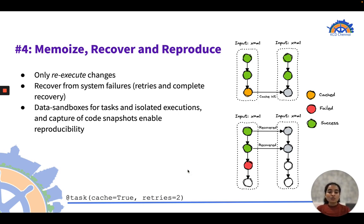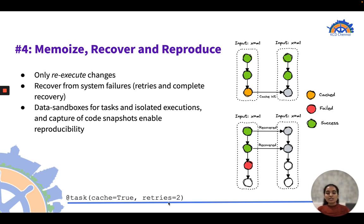Flight also supports retries. You can set the number of retries in the task decorator, and when set, Flight will attempt to re-run the pipeline in the case of failure.